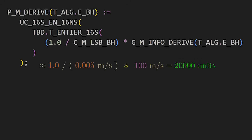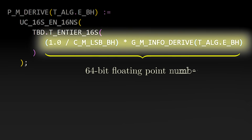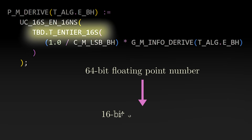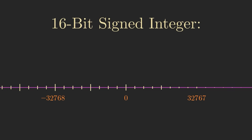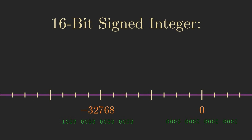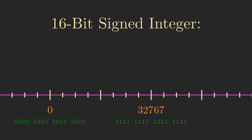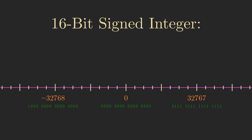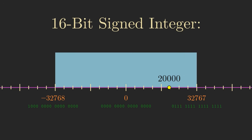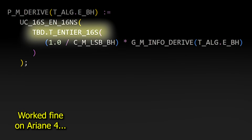The normalized reading was being stored in a 64-bit floating point number, which is a format that can represent very large and very precise values. But the software converted it into a different data type — a 16-bit signed integer. 16-bit signed integers can only represent numbers between negative 32,768 and positive 32,767. With the example we just did, the 20,000 normalized units would have fit comfortably within this range, and during Ariane 4 flights, for which the same code had successfully been in use for nearly 10 years, the conversion worked fine, as the readings never exceeded the maximum value.